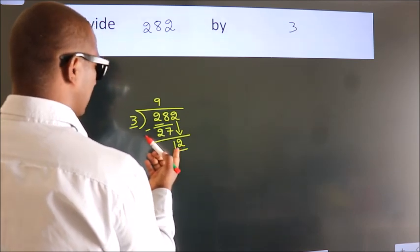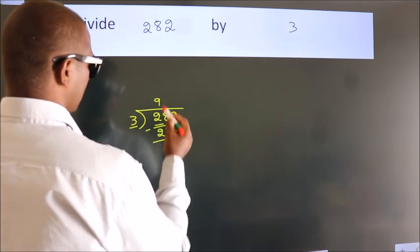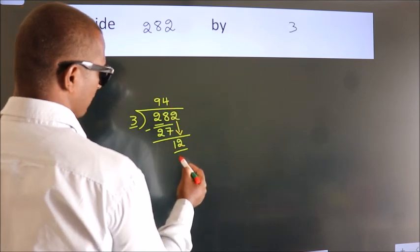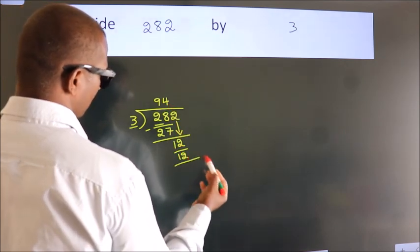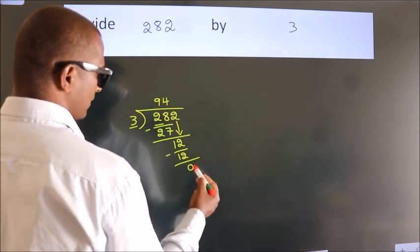When do we get 12 in the 3 table? 3 fours 12. Now we subtract. We get 0.